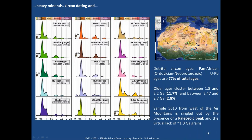Considering also zircon dating, it was interesting to see that all the desert had the same distribution of ages. The result converges on a Pan-African peak that is dominant all over the desert, from the Atlantic coast to the western valley of the Nile. We have some dissimilarities: the Stenian peak is more present in the eastern part of the desert and seems to be lacking in Morocco and Mauritania. The western Air mountain sample has a peculiar Paleozoic peak, and we see younger peaks from a sample in Burkina Faso, possibly due to supply from the Niger River.